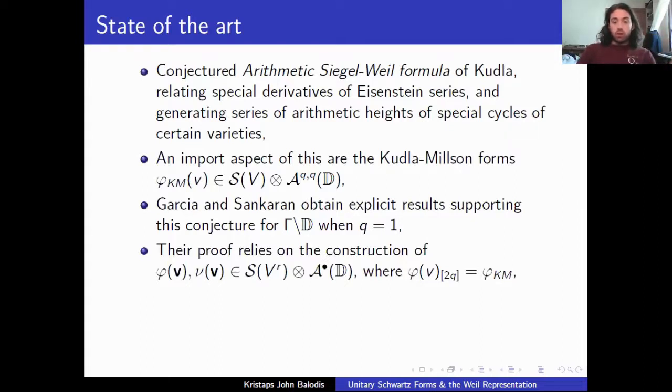And their proof relies on the construction of these certain forms. So now these are a little bit more general. So they live in a bigger space. So this is Schwartz functions on V, direct summed with itself r times, sitting in the space, or tensored with the space of differential forms. And it turns out that this sort of recovers the classical thing. So if you take the degree 2q component of φ, then you recover the classical Kudla-Milson form.